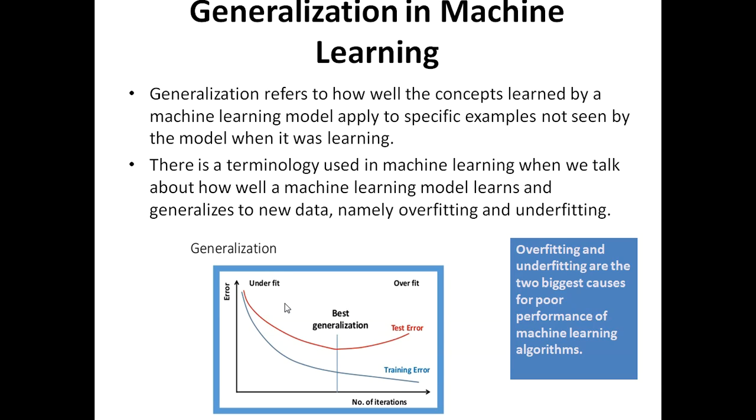we can say generalization refers to how well the concept learned by the machine learning model applies to specific examples not seen by the model when it was learning. At the time of training data we have a less amount of data, and when we actually implement them in some organization or problems, there will be a huge amount of data that the machine didn't see before. In that case, it should provide the results with the same accuracy as it was doing with the training data. There is a terminology used in machine learning when we talk about how well a machine learning model learns and generalizes to new data. That's called overfitting and underfitting. Basically, these overfitting and underfitting are two biggest causes for poor performance of machine learning algorithms.